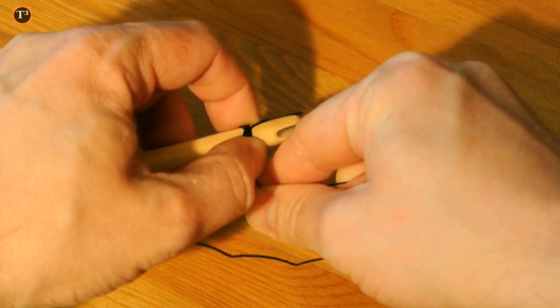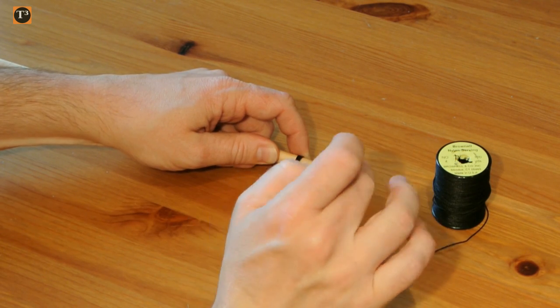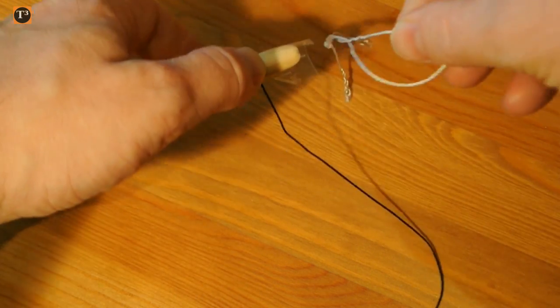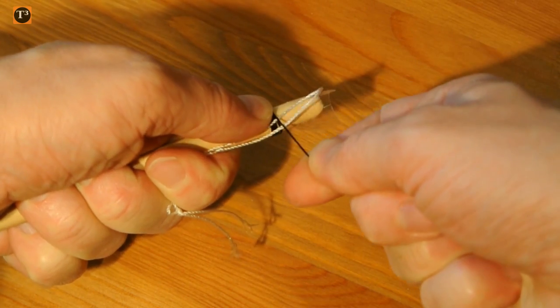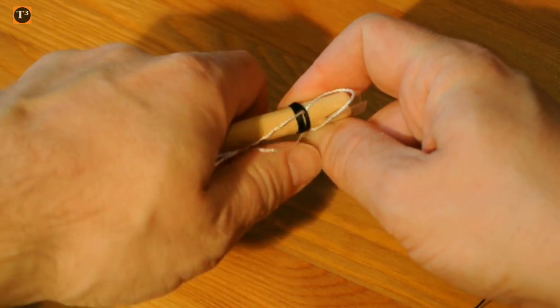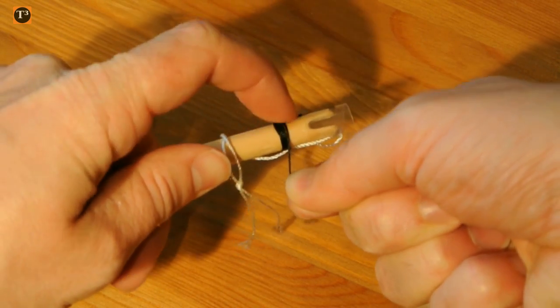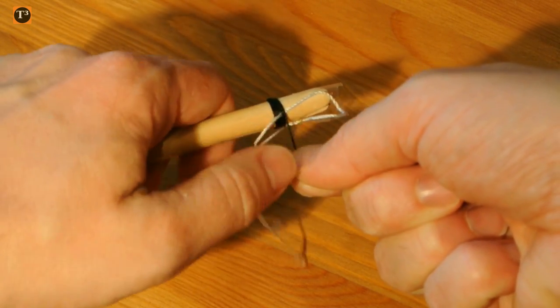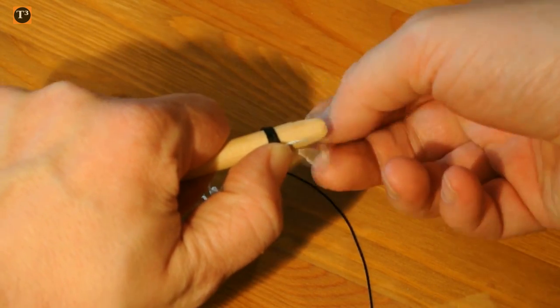Pull it really tight. After some windings, take a prepared loop and wrap it inside. Make sure the knot points away from the nock or you will have problems to get it out again.